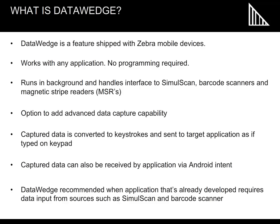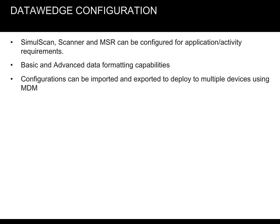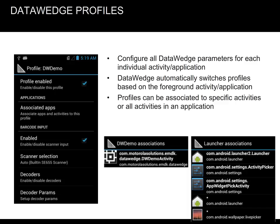It is recommended to use Data Wedge when an application that's already developed requires data input from sources such as SimulScan and barcode scanners. SimulScan, scanners, and magnetic stripe readers can be configured using Data Wedge for your application or activity requirements. Data Wedge provides basic and advanced data formatting capabilities, and configurations can be imported and exported to deploy to multiple devices using a mobile device management (MDM) tool.